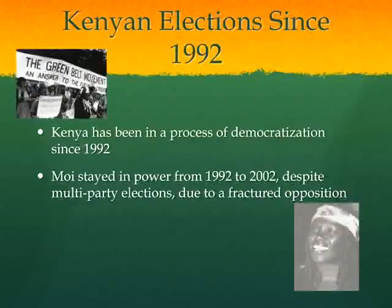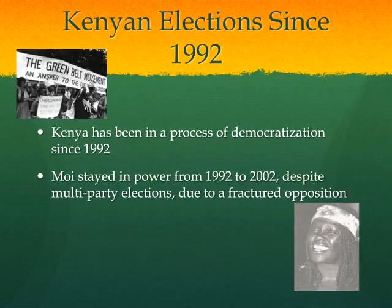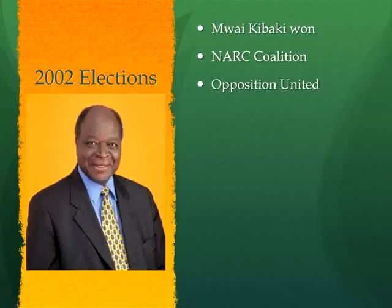After the Cold War ended, donors felt it was no longer reasonable to keep giving Kenya money given that it was not democratic at all. So Kenya entered a period of democratization in the early 1990s. We've had elections of varying levels of success since 1992, and the opposition was unable to beat President Moi until 2002 because they couldn't unite. His party KANU stayed in power throughout this period.